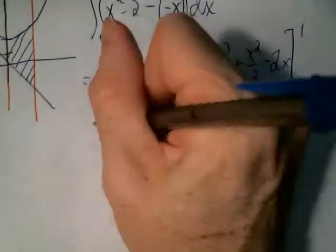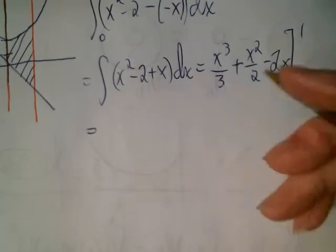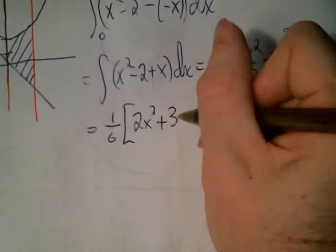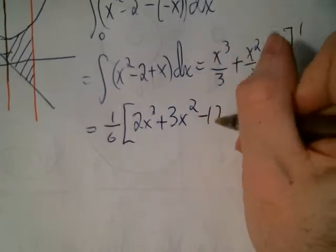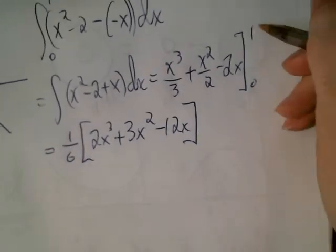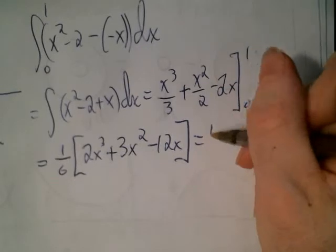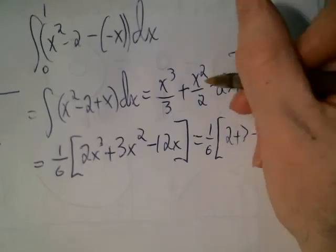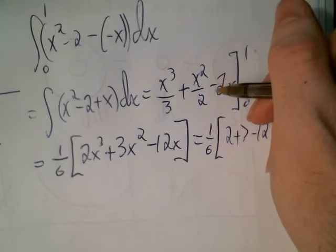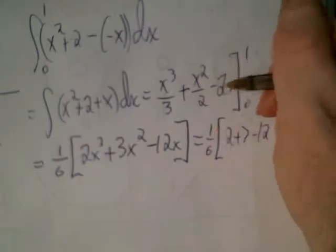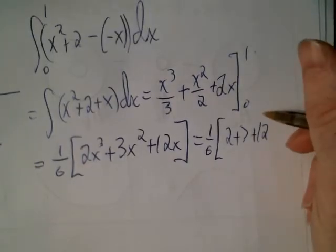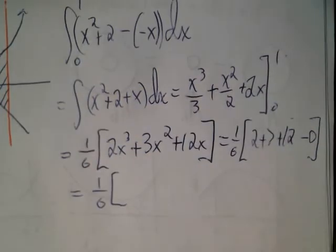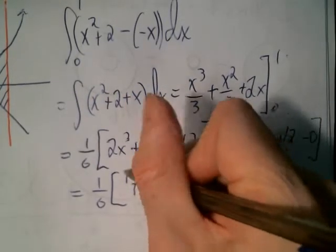That gives us X cubed over three plus X squared over two plus two X, evaluated from zero to one. Factoring out one-sixth, you get two X cubed plus three X squared plus 12X — wait, it's X squared plus two back there, so it's plus 12, not minus 12. Evaluating at one: two plus three plus twelve minus the value at zero, which is just zero, gives one-sixth times seventeen, so the answer is 17/6.